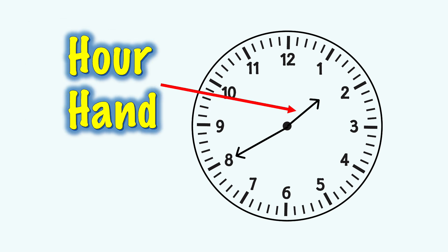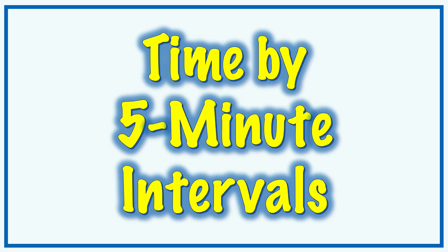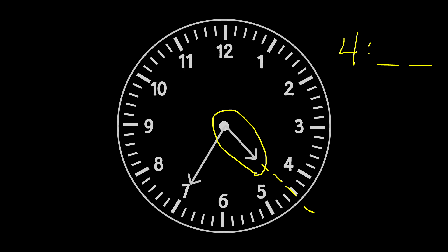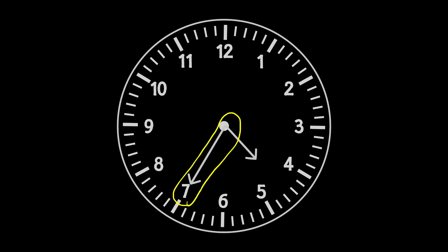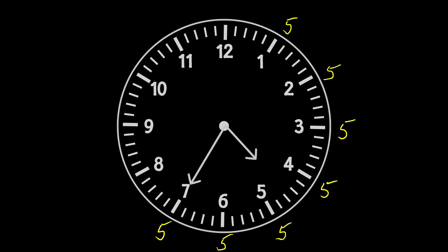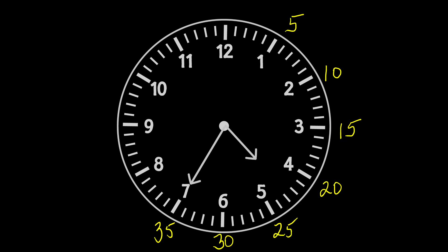An hour hand is a shorter hand on the face of an analog clock — it shows hours. When telling time by five-minute intervals: first, check the hour hand; next, look at the minute hand. Each number is five minutes — skip count by fives and you'll have your time.